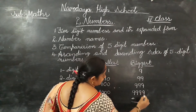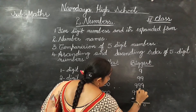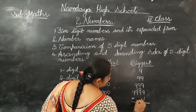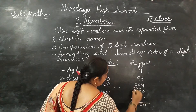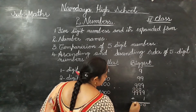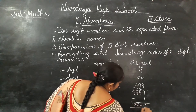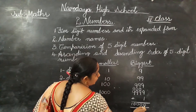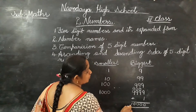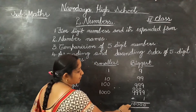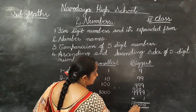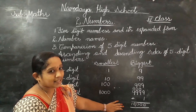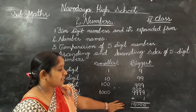Nine plus one is ten. Each digit nine plus one gives ten, carrying over each time. So we count the digits: one, two, three, four, five. We get a five digit number. That is ten thousand — the smallest five digit number.